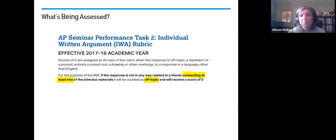Let's look at the bottom. For the purposes of the IWA, if the response is not in any way related to a theme connecting at least two of the stimulus material, it will be counted off as off topic and will receive a score of a zero. Remember we talked about a couple slides ago how important it was to connect it to two sources. But if you can't connect it to two sources and it's not in any way related, it's going to be off topic and you're going to get a zero. And think about the implications of that. What's the consequences? You did all of this work to earn a zero? Like what's the point of even doing it? We want to make sure we're really, really clear at the beginning and we put a lot of focus into picking the right question and making sure we're connected.